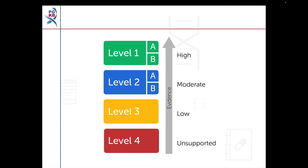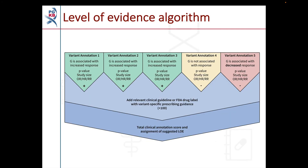Our levels of evidence run from Level 4, for associations which aren't supported by the curated evidence, to Level 1, which is assigned to associations with the strongest evidence, including support from drug labels and clinical guidelines. We use an algorithm to assign a level of evidence to clinical annotations. This flowchart gives you an overview of the different steps of the algorithm.